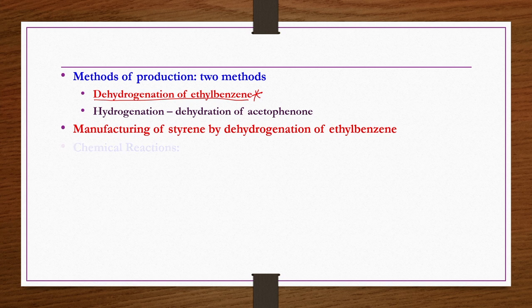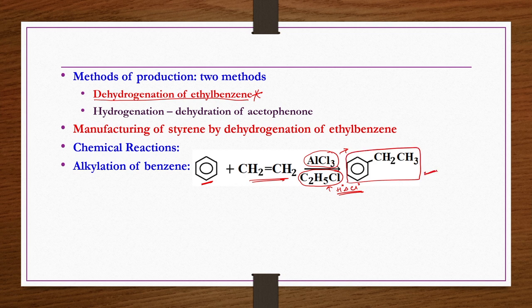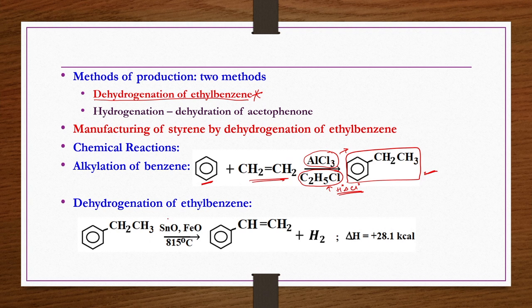Manufacturing of styrene by dehydrogenation of ethylbenzene involves two chemical reactions. First, production of ethylbenzene by alkylation of benzene: benzene reacts with ethylene in the presence of aluminum chloride catalyst and ethyl chloride. Ethyl chloride supplies hydrogen and chlorine free radicals, enhancing the catalytic activity of AlCl₃. This alkylation reaction is also known as the Friedel-Crafts reaction.